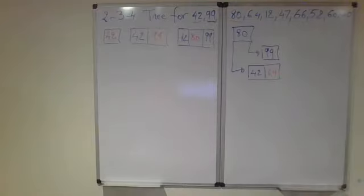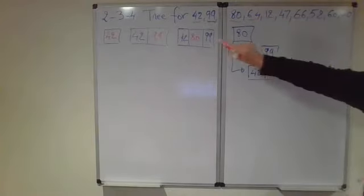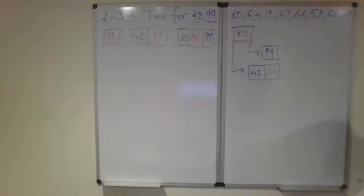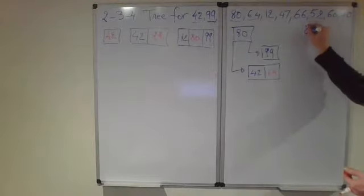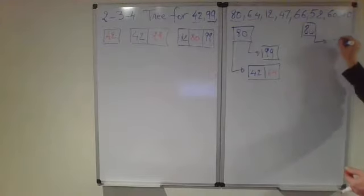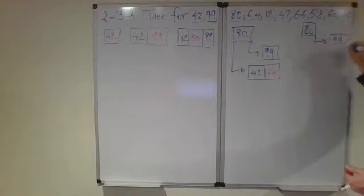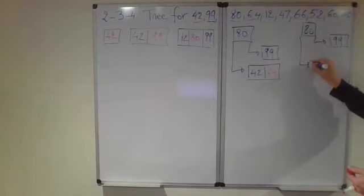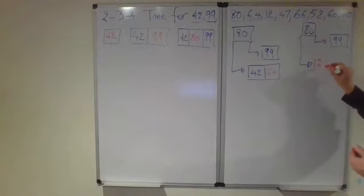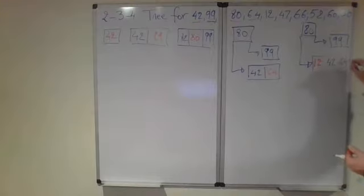When the number 64 is inserted in this four-node, it gets split. When 12 comes in, it is less than 80, so it goes to the left. The right remains unchanged. There is enough space here. I can insert 12, turning this two-node into a three-node.